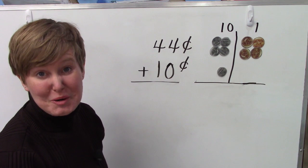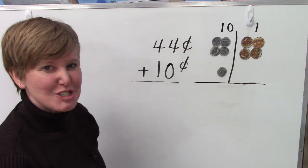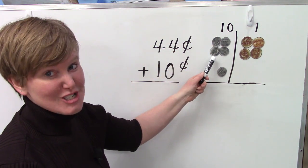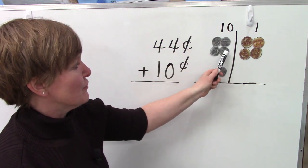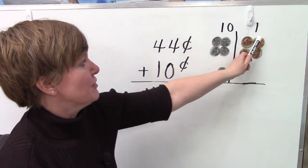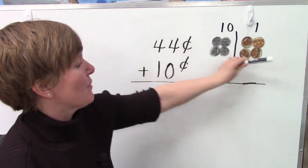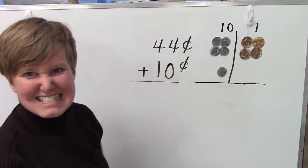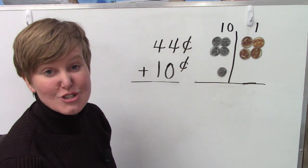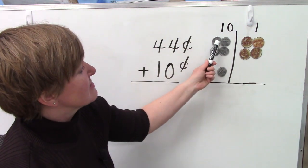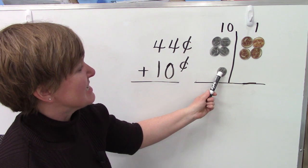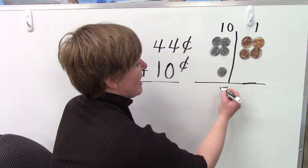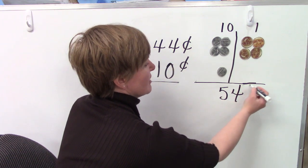Here we have 44 plus 10. Let's look at our coins. In our tens place, we have our dimes. 10, 20, 30, 40. 41, 42, 43, 44. Here we have 44 cents. And down here, we're going to add 10 cents to it. Let's count it starting with our dimes. 10, 20, 30, 40, 50. 51, 52, 53, 54. We have 54 cents.